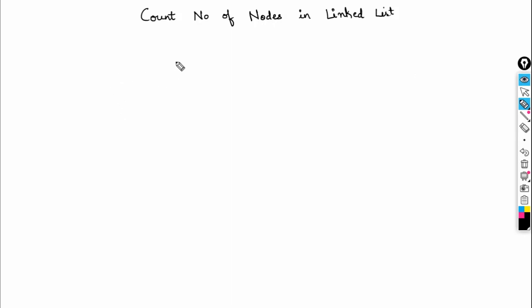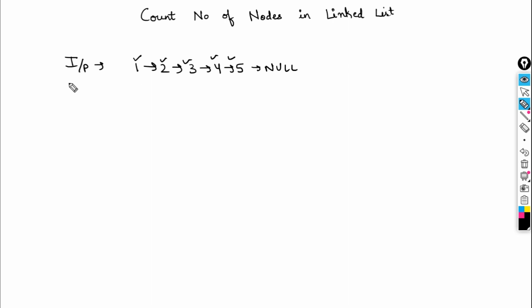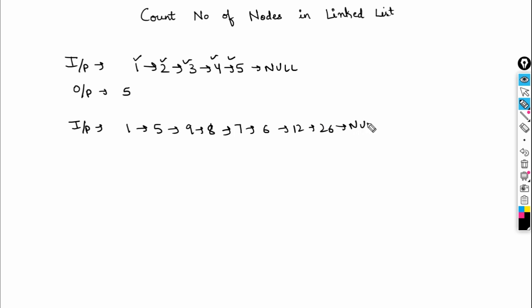In this video we are going to discuss how we can count the number of nodes in a linked list. I'll be given a linked list containing nodes one, two, three, four, and five — that's five nodes, so I need to return five. For another example, say my linked list is one, five, nine, eight, seven, six, twelve, twenty-six — that's eight nodes, so I should return eight.